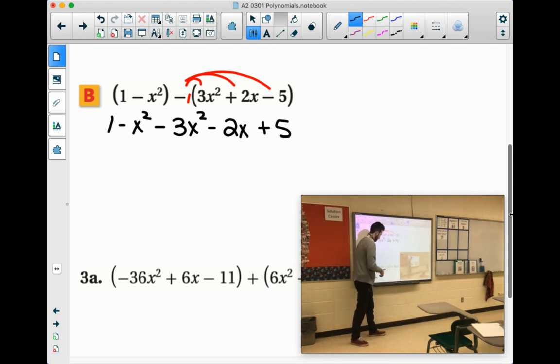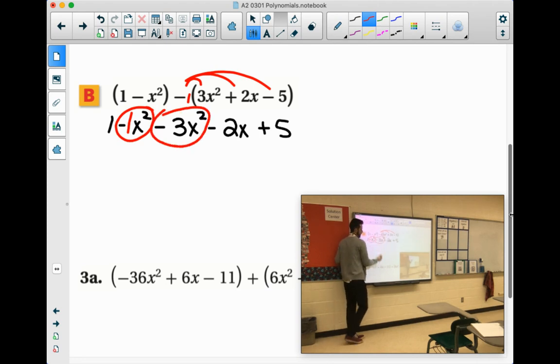So if you look for our highest degree, we have the x squared. We have negative 1x squared minus 3x squared. Negative 1 minus 3 is negative 4x squared.